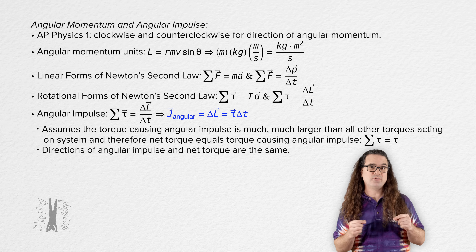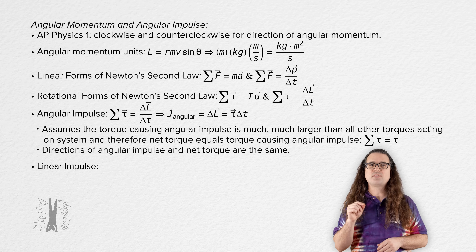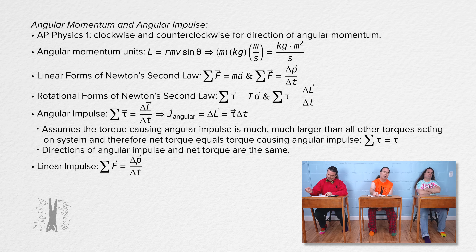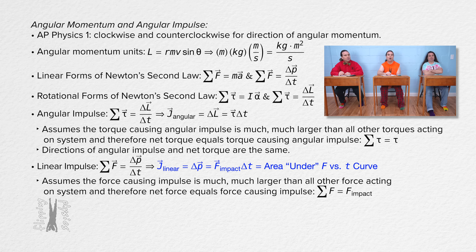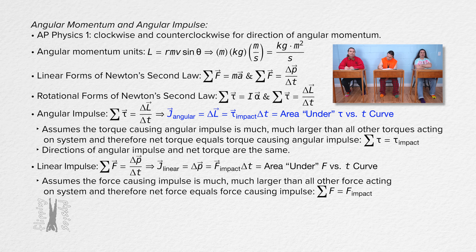Going back to linear impulse: linear impulse equals change in linear momentum, and it equals the force causing the impulse times change in time — assuming the impact force is much larger than all other forces, making the impact force equal to the net force. Linear impulse also equals the signed area under an impact force versus time curve. Angular impulse equals change in angular momentum, impact torque times change in time, and the area under an impact torque versus time curve.